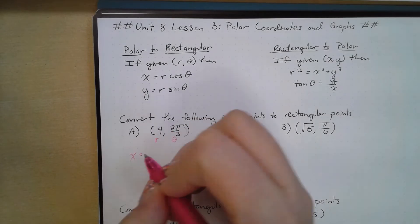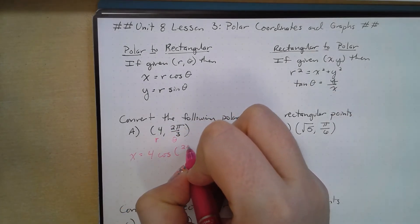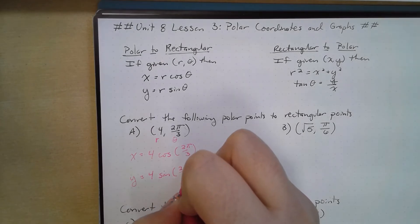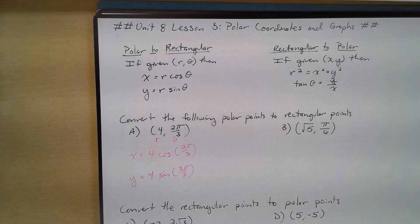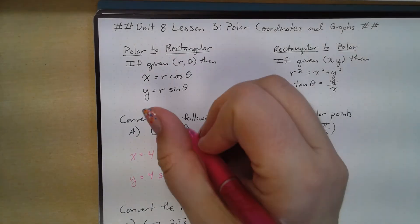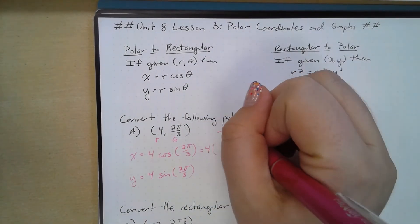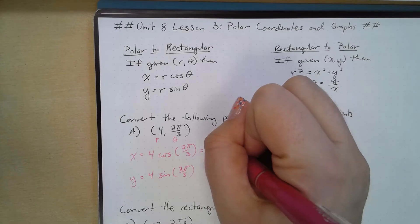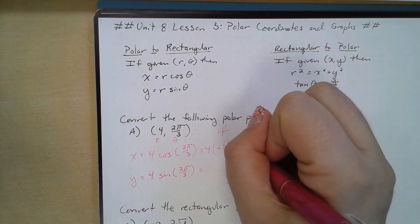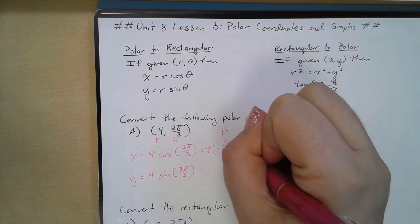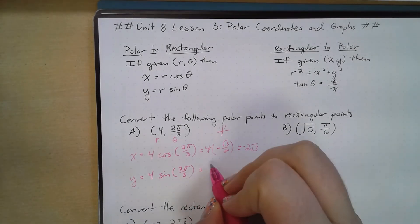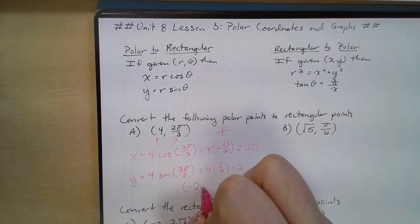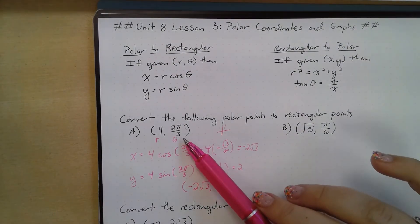Our x coordinate is going to be equal to r cosine of 2π/3, and our y coordinate is going to be equal to r sine of 2π/3. So x equals 4 times cosine of 2π/3, which is negative √3/2, giving us negative 2√3. And y equals 4 times sine of 2π/3, which is 1/2, giving us 2. So our rectangular point is (−2√3, 2).